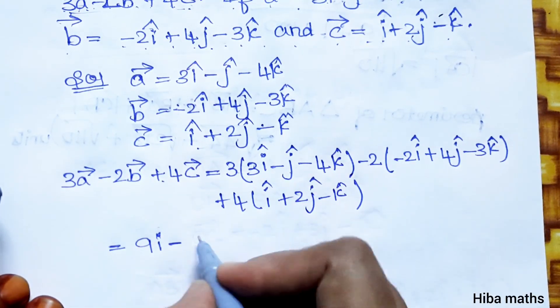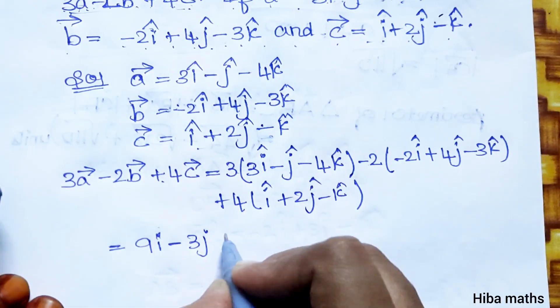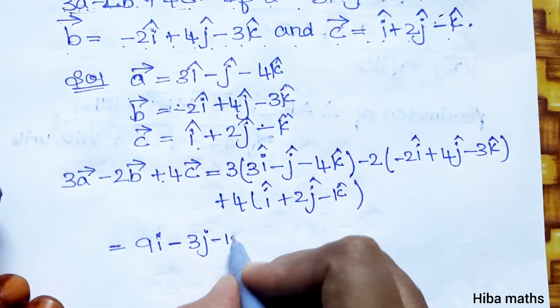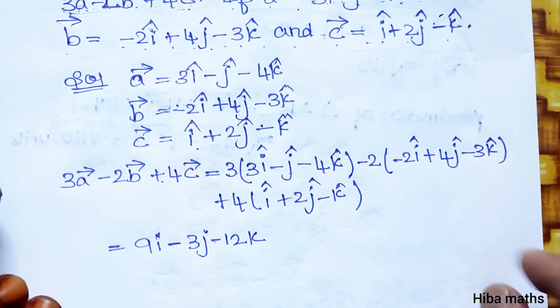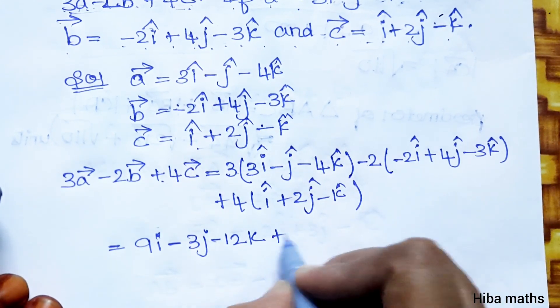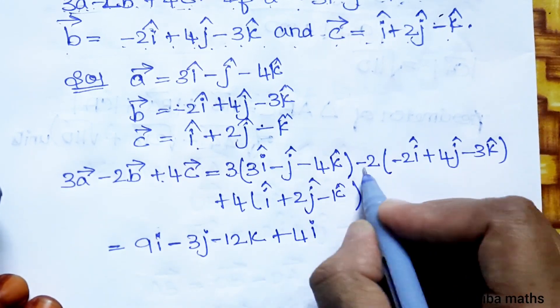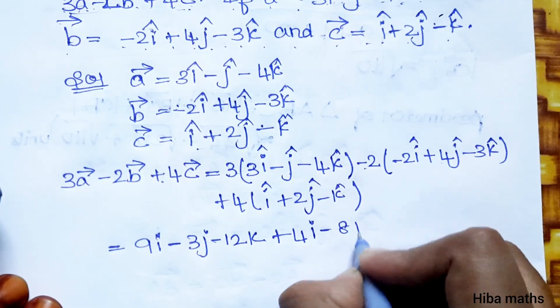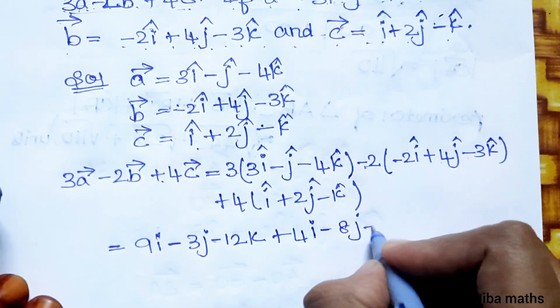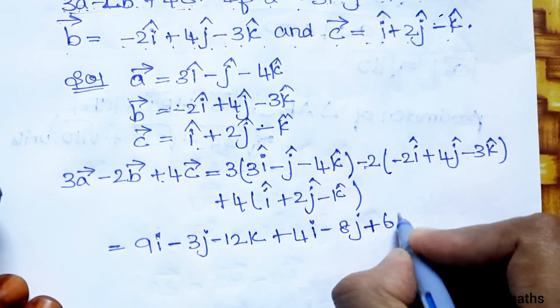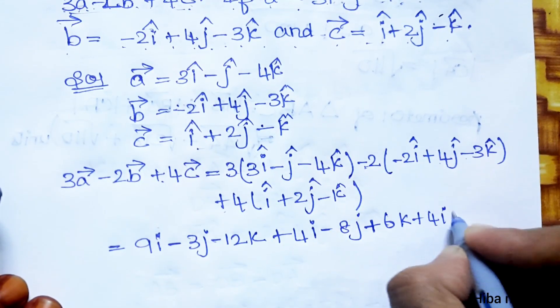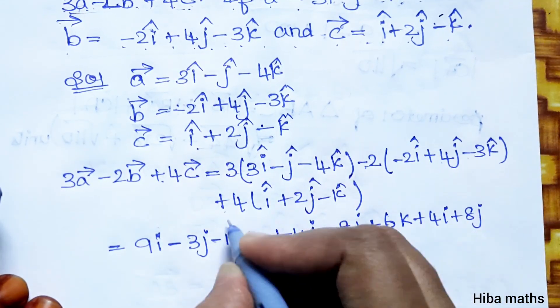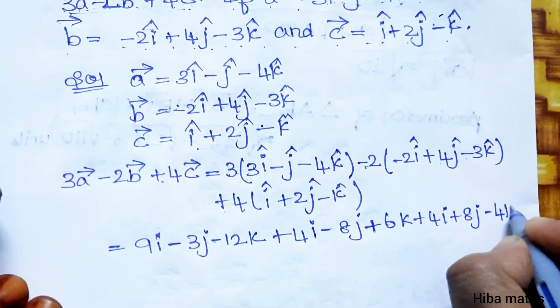Minus 2 times the second vector gives plus 4i minus 8j plus 6k. Plus 4 times the third vector gives 4i plus 8j minus 4k.